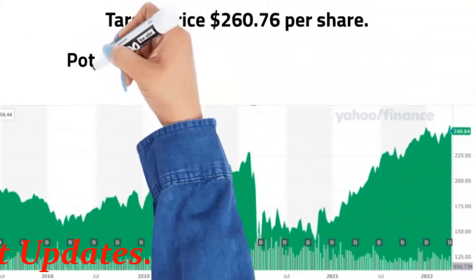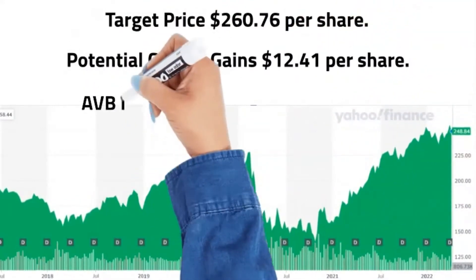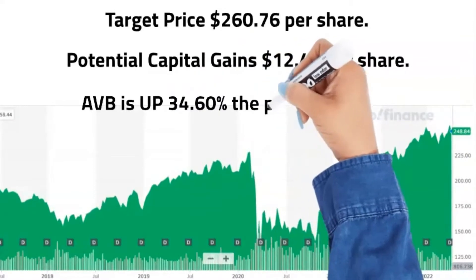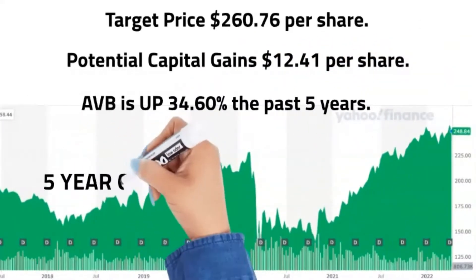AVB is up 34.60% the past five years. The long-term trend has been up since March 29, 2022 at $257.52 per share.